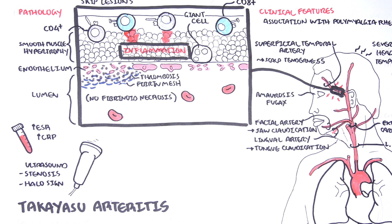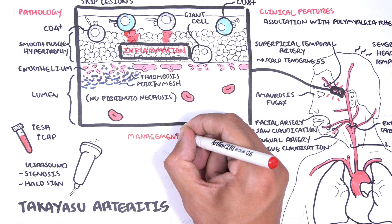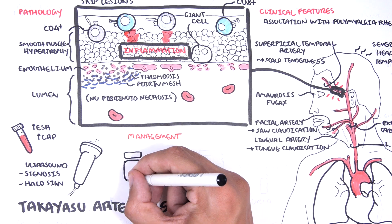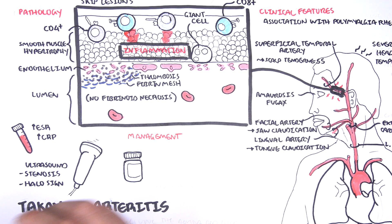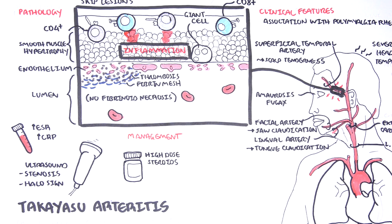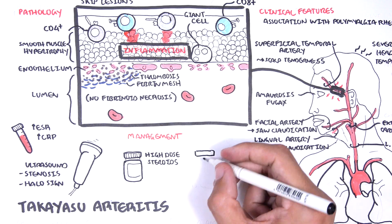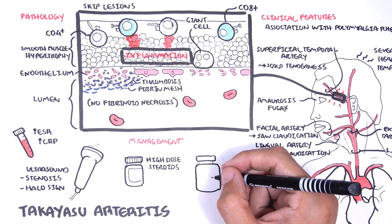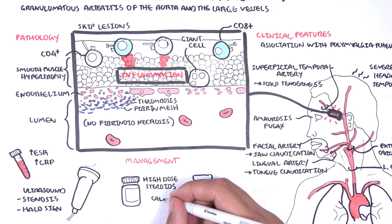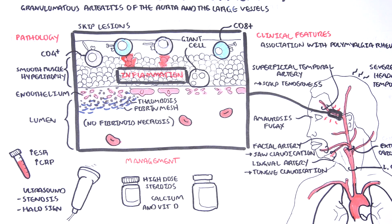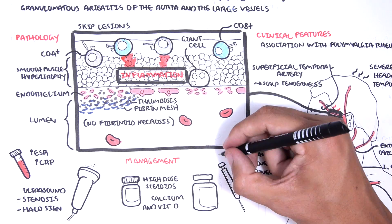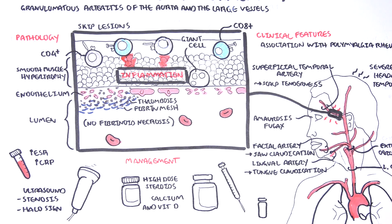Giant cell arteritis requires high-dose glucocorticoids, which will be tapered slowly over 6 to 12 months. It is important to keep in mind the risk of osteoporosis, especially in the elderly female population group. Calcium and vitamin D supplements, and oral or IV bisphosphonates, are essential.